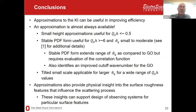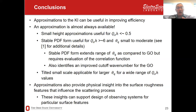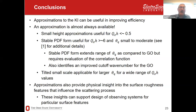To summarize: we're computing approximations to the Kirchhoff integral. Small height approximation is available when the surface is fairly flat. Stable PDF works for rougher surfaces at larger non-specular angles. Traditional GO is useful near specular, and the improved stable PDF cutoff wave number improves upon it. Tilted small-scale works very well for large non-specular angles. Combining all these, we get good approximations across the Kirchhoff integral parameter space and gain physical insight into surface scattering effects, which can help design future observing systems for measuring properties of rough surfaces.